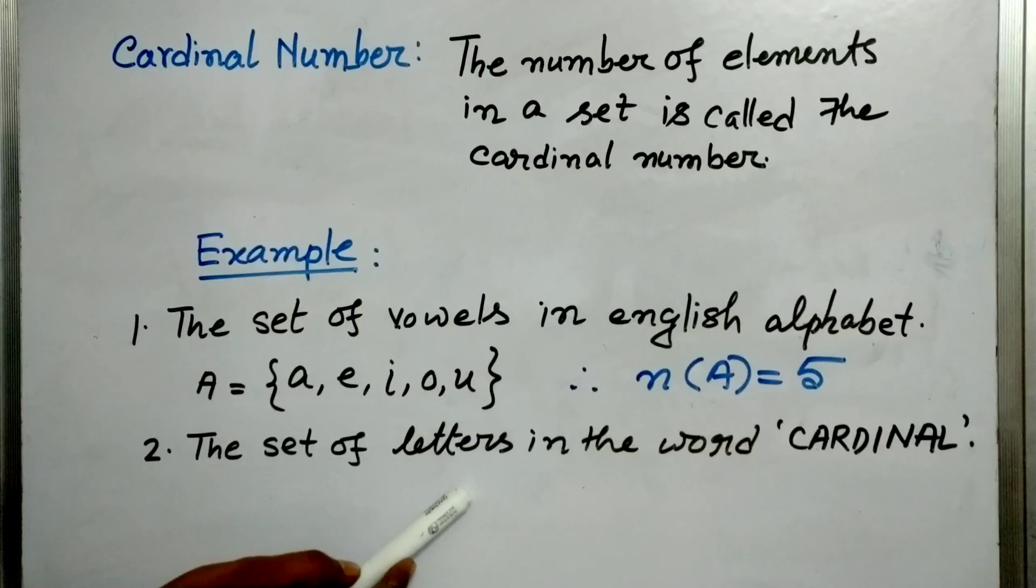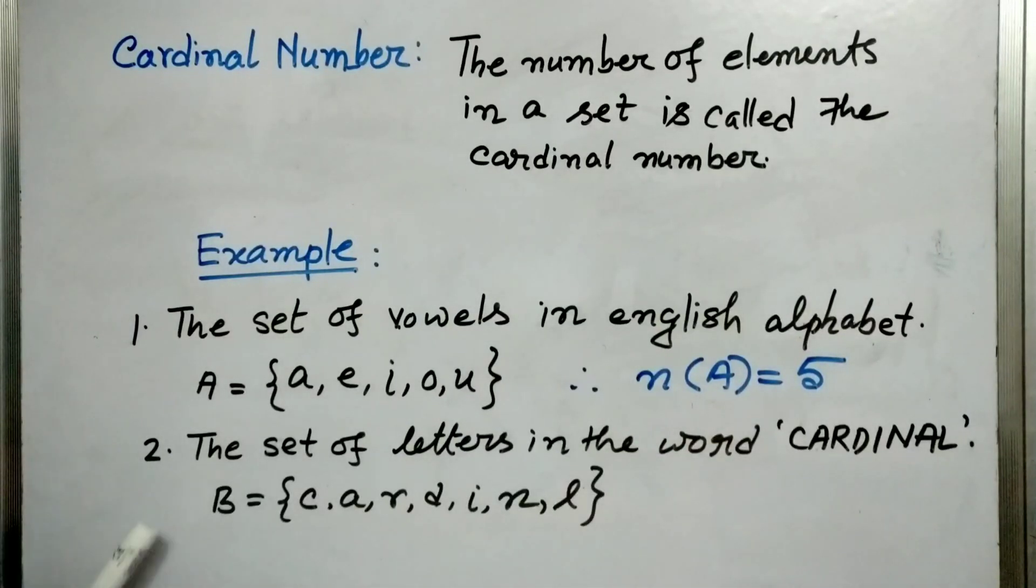Let us take another set. The set of letters in the word cardinal. So let us call the set as B and the letters are C, A, R, D, I, N. Now A is already here so we will not repeat A and at last it is L. Now let us count how many elements are here: 1, 2, 3, 4, 5, 6, 7. Therefore N(B) is equal to 7.